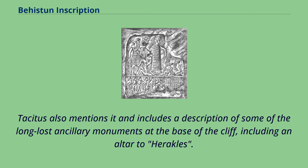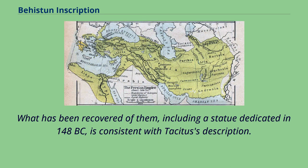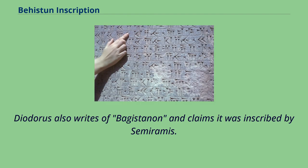Tacitus also mentions it and includes a description of some of the long-lost ancillary monuments at the base of the cliff, including an altar to Heracles. What has been recovered of them, including a statue dedicated in 148 BC, is consistent with Tacitus's description. Diodorus also writes of Bagistanon and claims it was inscribed by Semiramis.